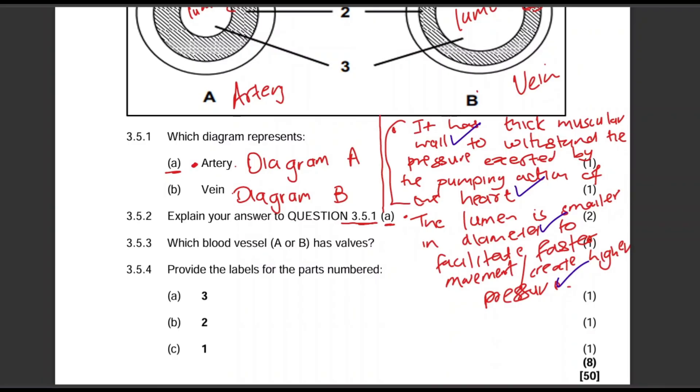Okay. Which blood vessel A or B has valves? Definitely B. So that will be diagram B, the vein.